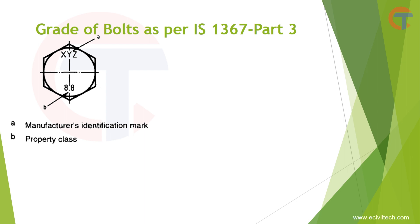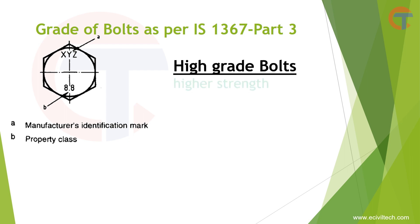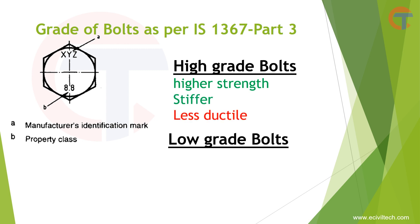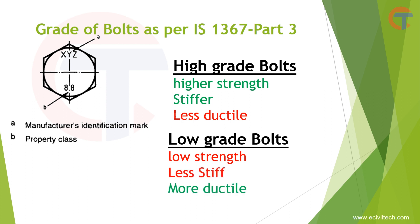The grade of bolts indicates the strength of material. Higher grades mean higher strength, more stiff but less ductile. Whereas low grade bolts indicate low strength, less stiff but more ductile.